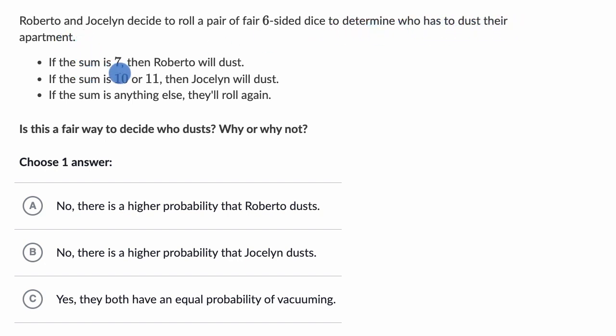If the sum is seven, then Roberto will dust. If the sum is 10 or 11, then Jocelyn will dust. If the sum is anything else, they'll roll again.